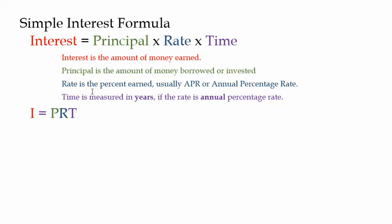Rate is the percent that's earned — or paid. It's earned if you're investing the money, and it's the percent that you have to pay if you're borrowing the money. Usually the percent is an annual percentage rate, and the time here is based on whatever the rate is based on. So if the rate is an annual percentage rate, then the time is measured in years.